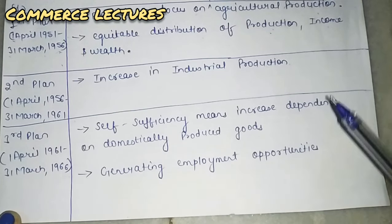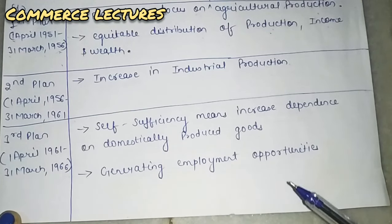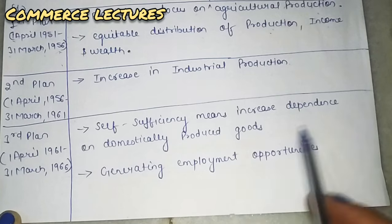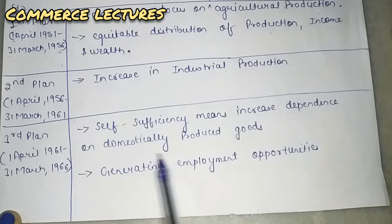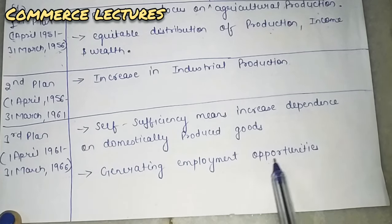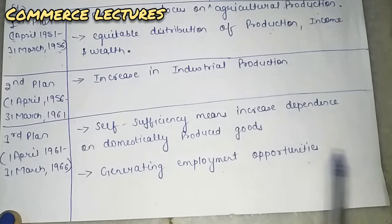The second plan focused on self-sufficiency — being more and more dependent on domestically produced goods — and on generating employment opportunities. This was the main aim of this planning.